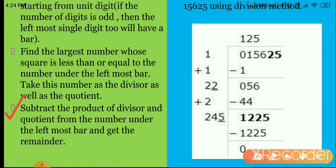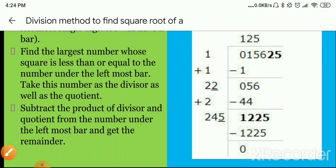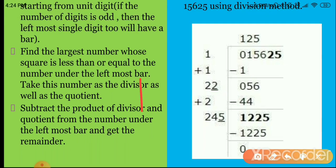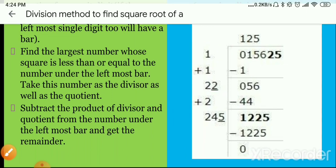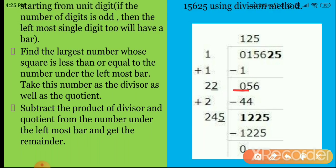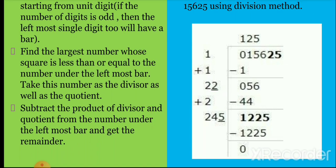Step 3: Subtract the product of the divisor and the quotient from the number under the leftmost bar and get the remainder. Here the divisor is 1 and the quotient is 1, so their product is 1. Subtract: 1 minus 1 = 0. So our remainder is 0. For example, if instead of 01 you had 05, then 5 minus 1 = 4 would be the remainder.